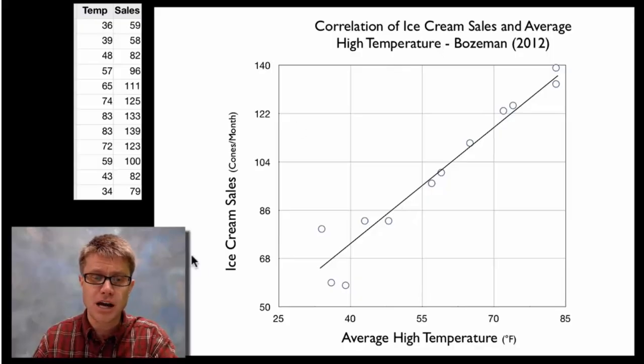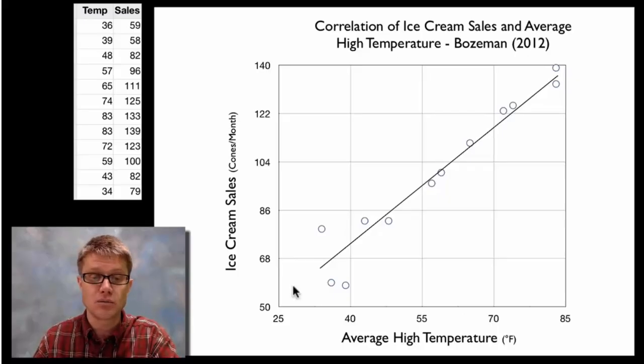So these are all the elements of a graph. Good title, label the axes, make sure you have linear numbers. So you can see here that there's 15 between each of those major grid lines and we're going to have the same thing here on the y. You've got your data points and then you have a best fit line. So those are all the elements of a good graph.